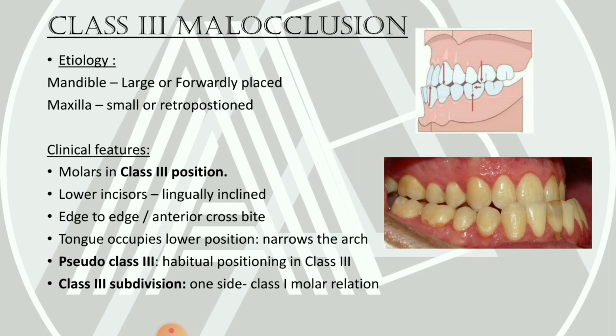The variant is pseudo Class 3, which is produced by the forward movement of the mandible during jaw closure — it may be a postural or habitual position of the patient. Class 3 subdivision is characterized by a Class 3 molar relationship on one side and a Class 1 molar relationship on the other side, so the molar relationships differ between the two sides.